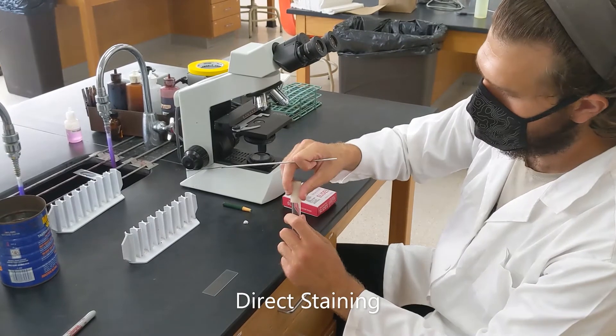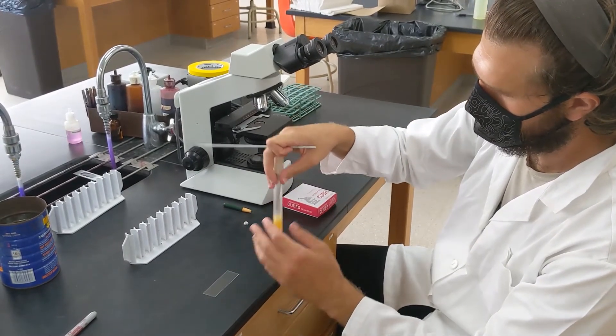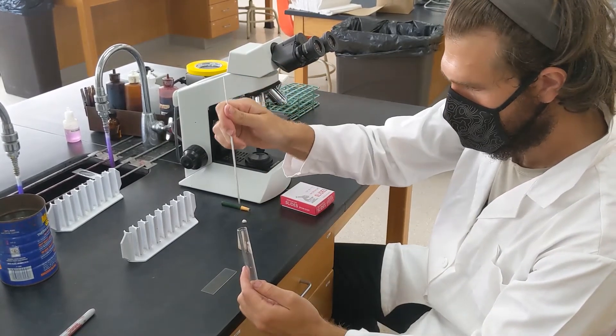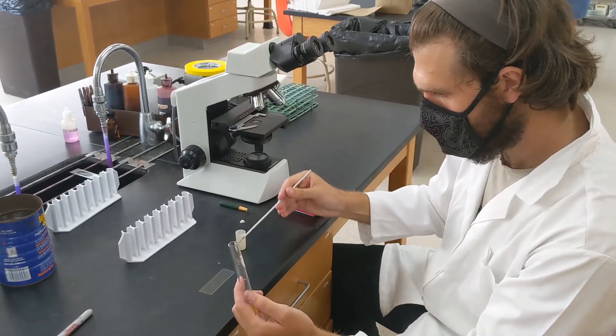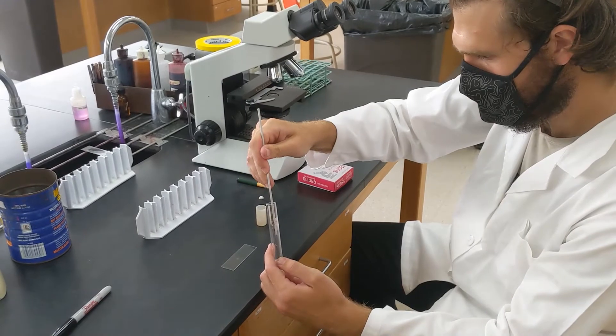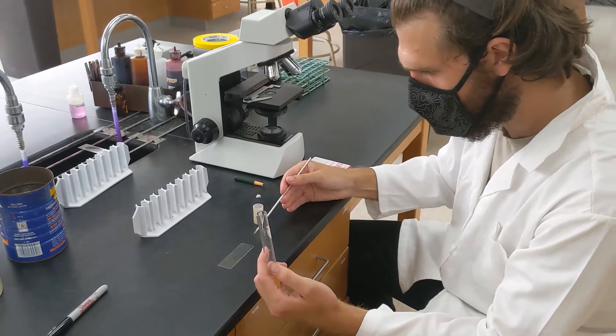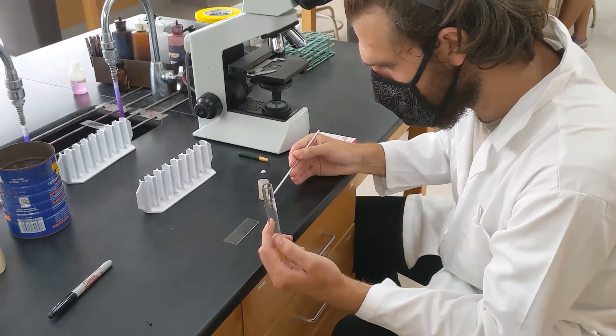So to start off your direct stain, I'm going to take the mix culture, the same as we used to streak the plates. Take a loopful, I'm actually going to use two loopholes, and spread it out kind of around the middle third of the slide.